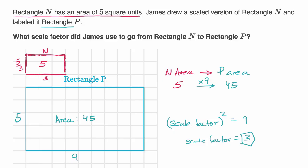So notice, when we have the area growing by a factor of nine, the scale factor of the size, to go from five-thirds to five, you multiply by three. To go from three to nine, you multiply by three.